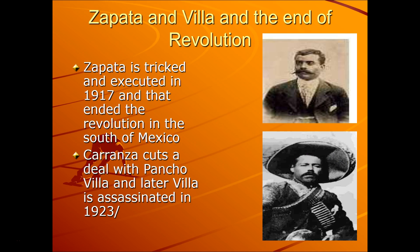Zapata and Villa mark the end of the revolution. You can mark the end when Zapata is tricked and executed in 1917, which ended the revolution in southern Mexico. Carranza cuts a deal with Pancho Villa, and then Villa is assassinated in 1923 — but he still remains a hero for his revolutionary fervor and energy. And that's the story of the Mexican Revolution. Thank you for watching.